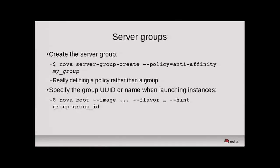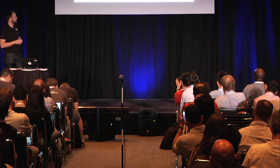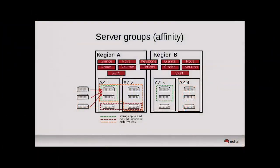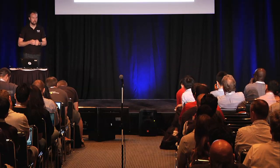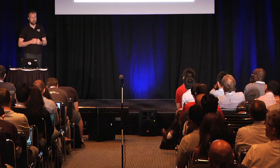With a three-instance affinity group, if you launch a fourth instance and there's no capacity left on the chosen host, these are hard affinity and hard anti-affinity policies. That means the scheduler will fail with a 'no valid host' error — one of the more confusing errors in Nova, because you get a scheduling error back but often don't know why.